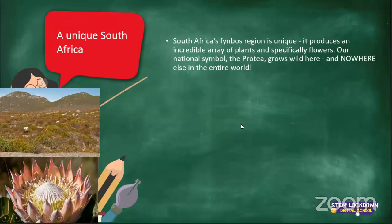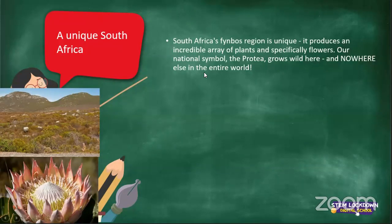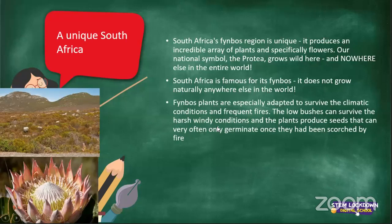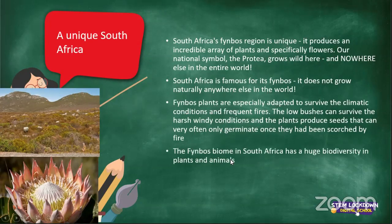A unique South Africa — South Africa's fynbos region is unique. It produces an incredible array of plants and specifically flowers. Our national symbol, the protea, grows wild there and nowhere else in the entire world. South Africa is famous for its fynbos. It does not grow naturally anywhere else in the world. Fynbos plants are adapted to survive the climatic conditions and frequent fires. The low bushes survive harsh windy conditions, and the plants produce seeds that can only germinate once scorched by fire.